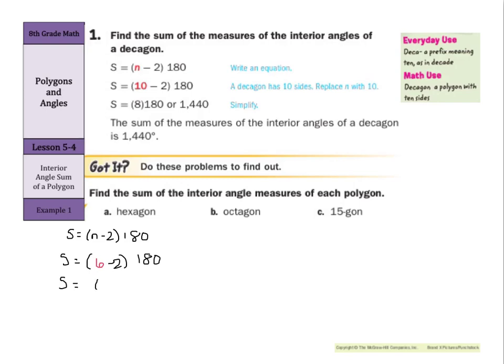So we can say S equals, and in parentheses put in the 6 for n, minus 2 multiplied by 180. Now don't try to take shortcuts here. Just keep working in your equation. S = 4, since 6 minus 2 is 4, multiplied by 180. And 4 multiplied by 180 is 720 degrees.